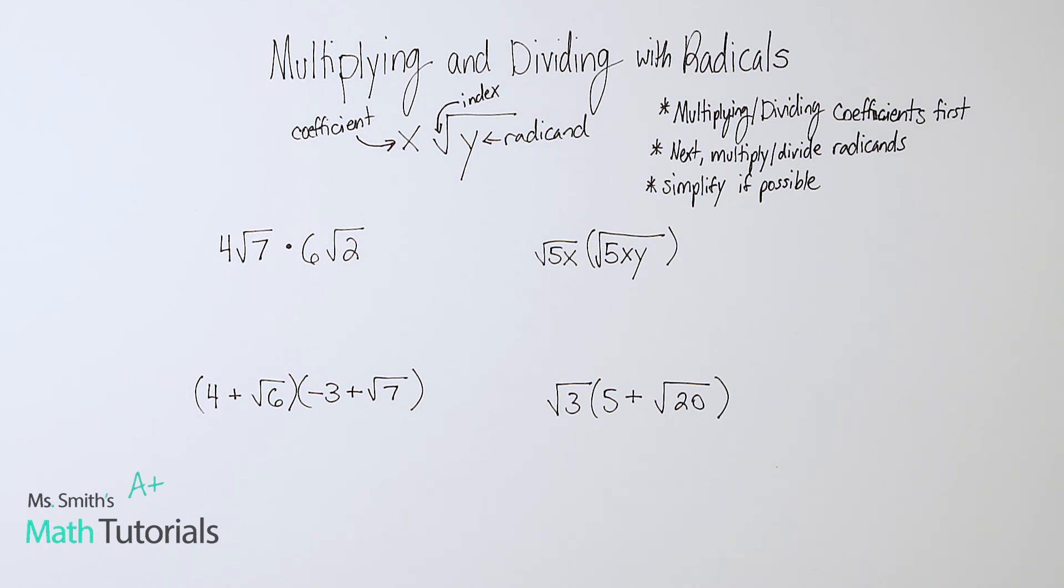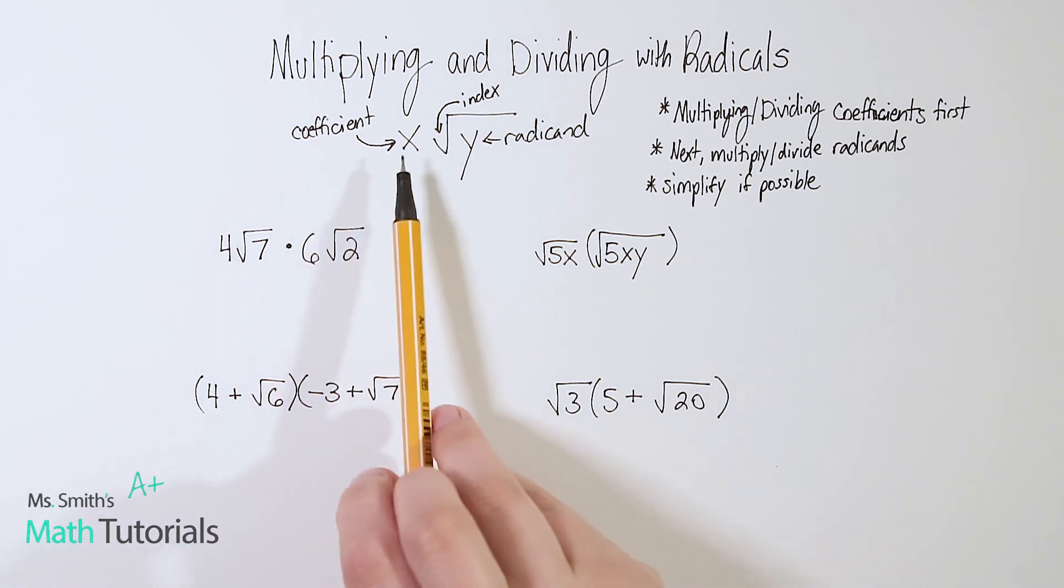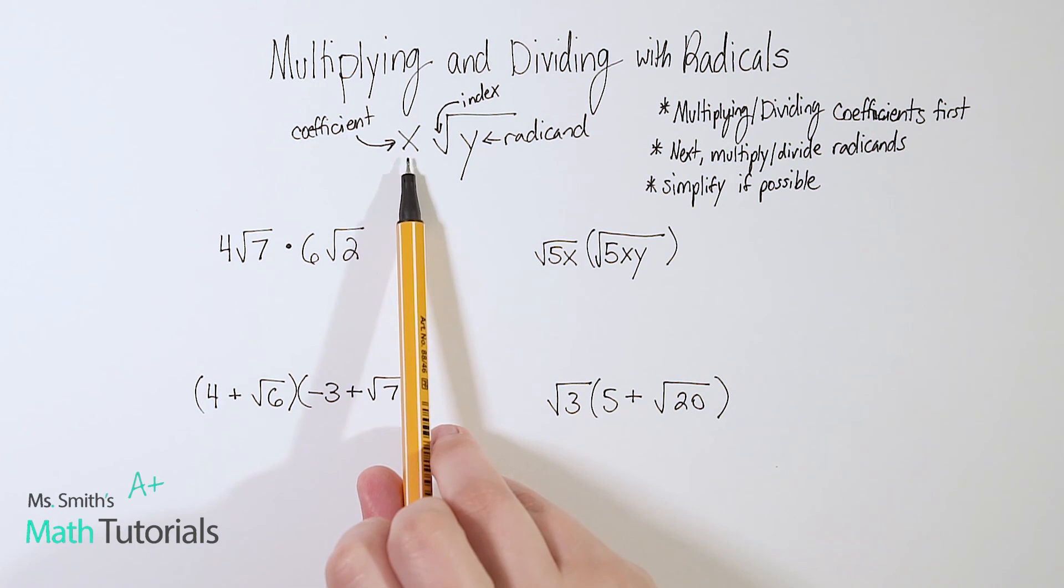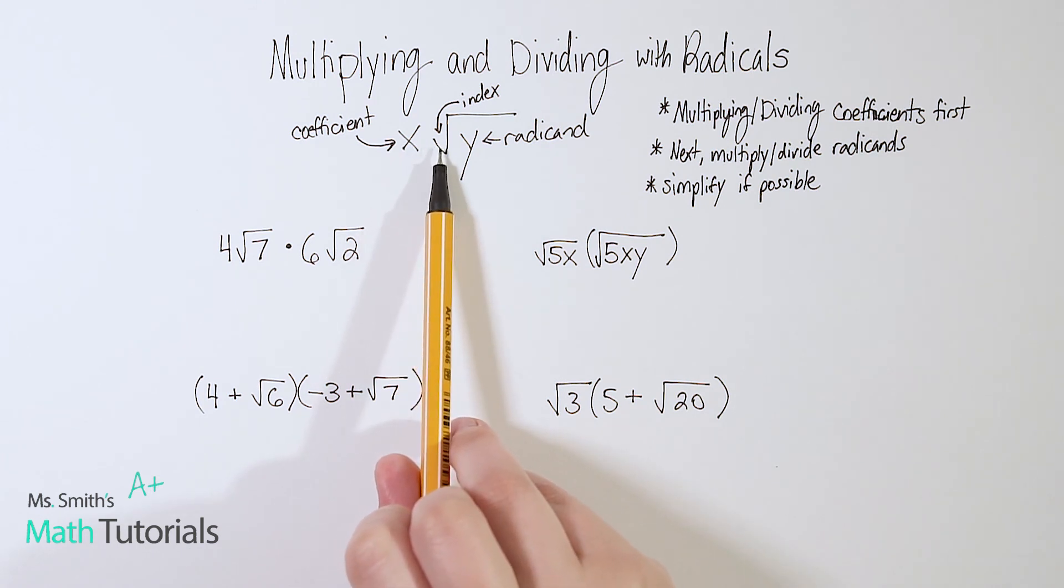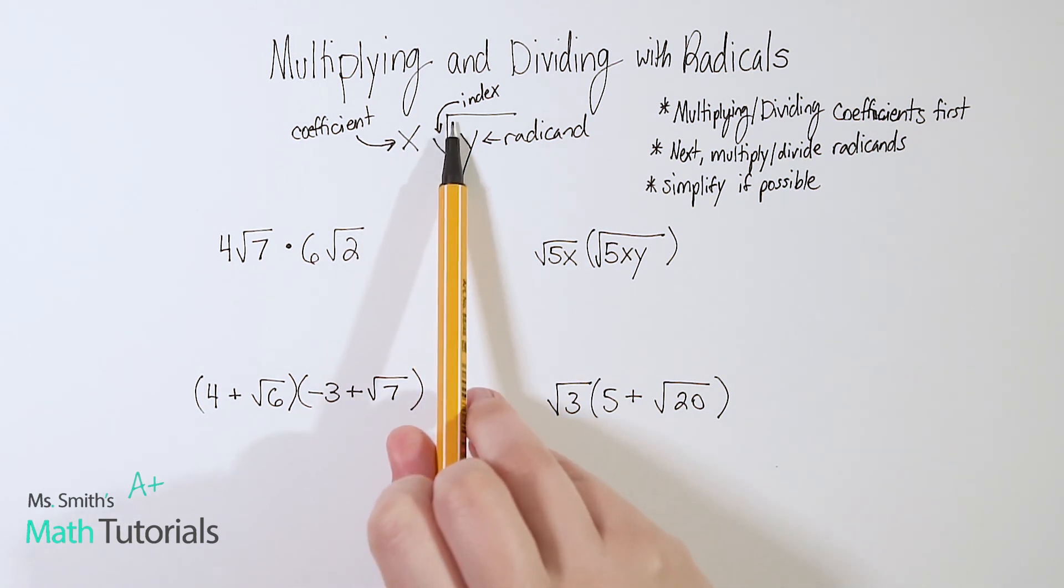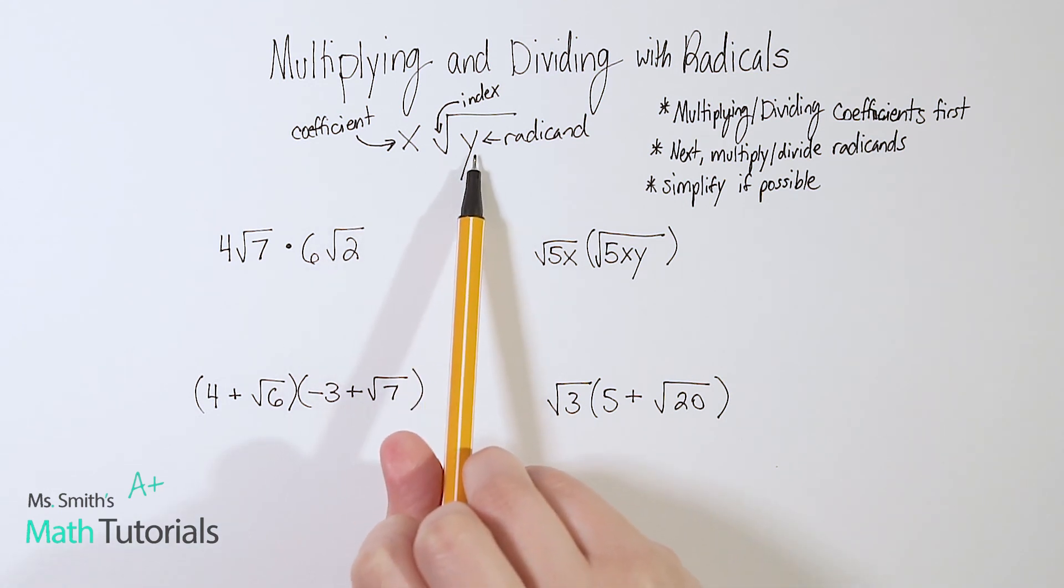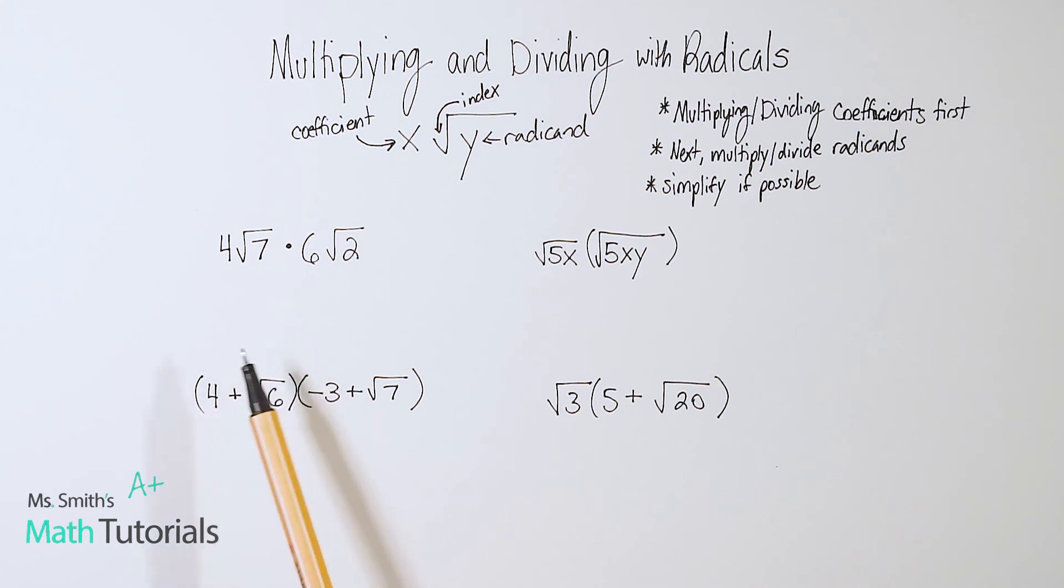A couple rules we need to lay out first and some vocab. The number outside of the radical is called the coefficient. The number in the little check is called the index or the root. And then the number or letter underneath the radical, that's called the radicand.